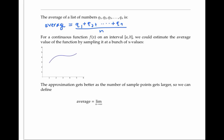In summation notation, we write the sum from i equals one to n of q_i, all divided by n.